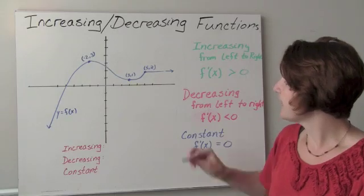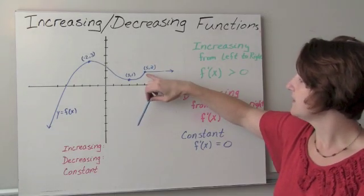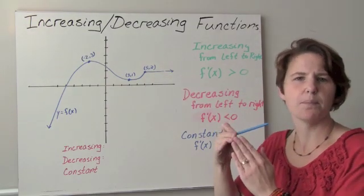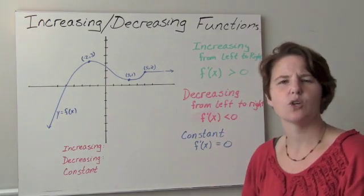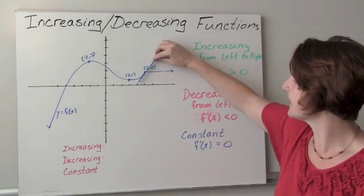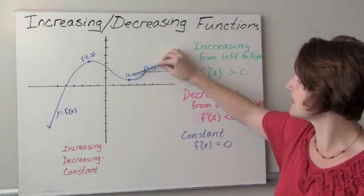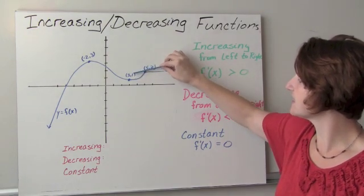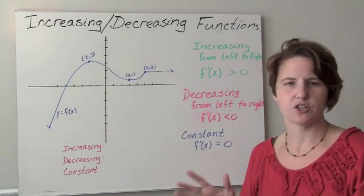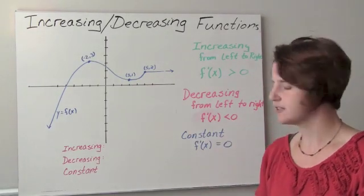I would like to point out that at the point (5, 2), this is a sharp corner, and so we don't say that the derivative exists here because I can't find a point where the tangent line just touches exactly once. There's a sharp corner, so the derivative doesn't exist at sharp corners.